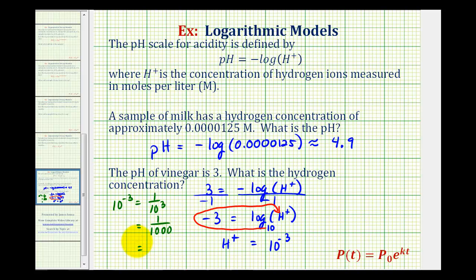Or in decimal form, 1 over 1000 is 0.001. Therefore, the hydrogen ion concentration for this vinegar is 0.001 moles per liter, which we can express with a capital M.